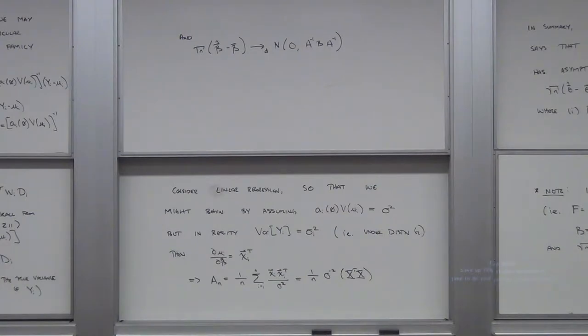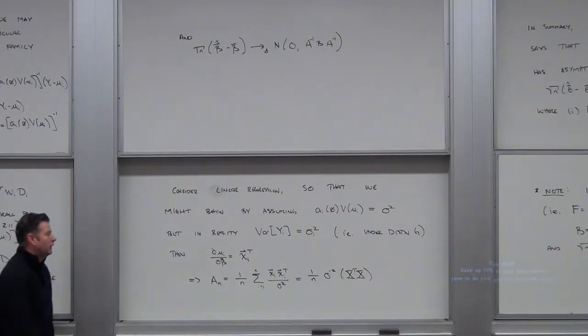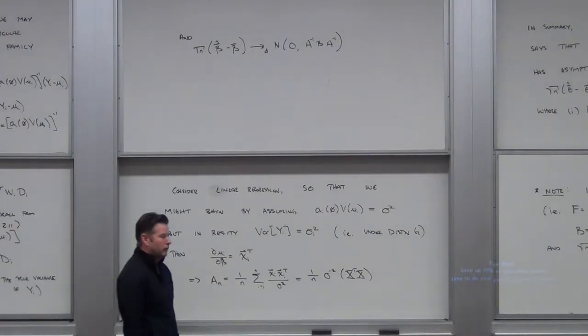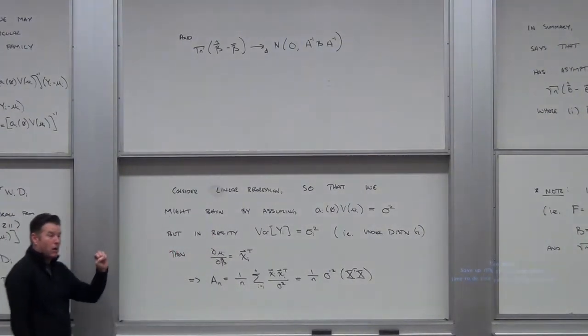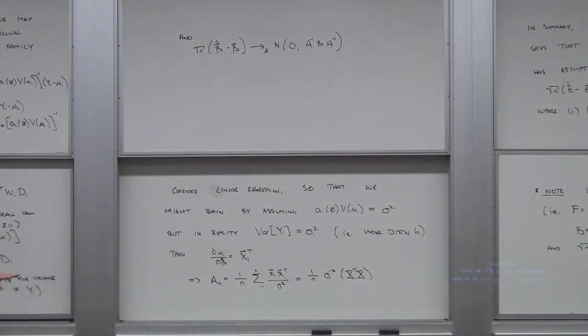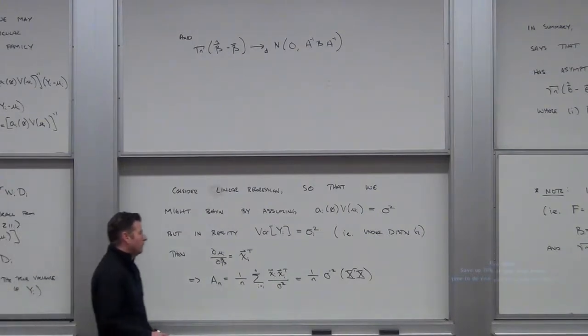Does that look familiar to us? It better, right? So if I take the inverse of that thing, I get sigma squared times (x transpose x) inverse, which is your good old model-based variance estimator.